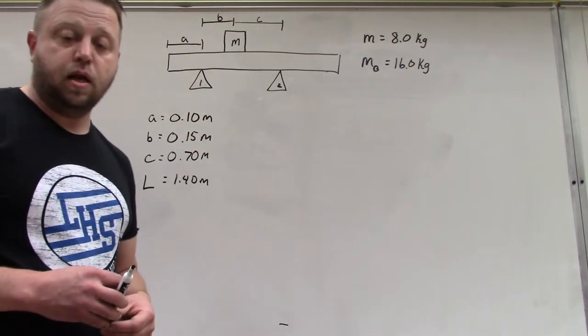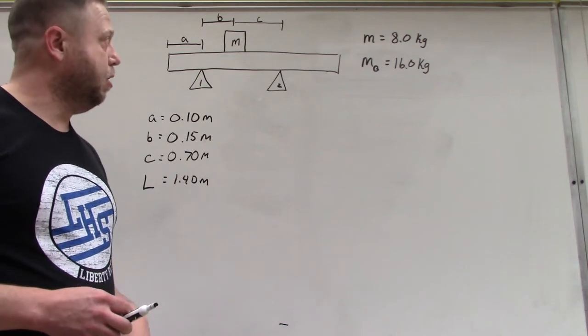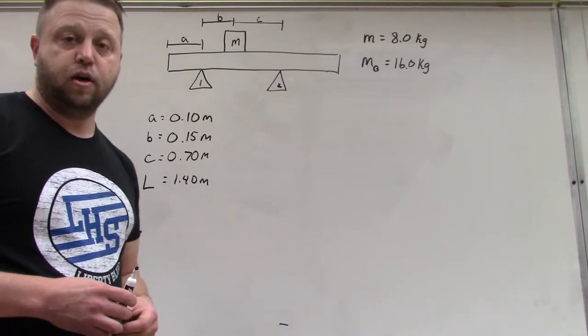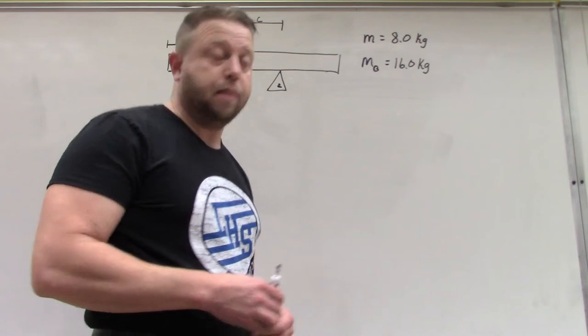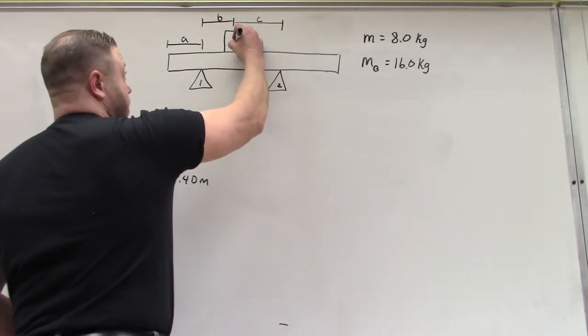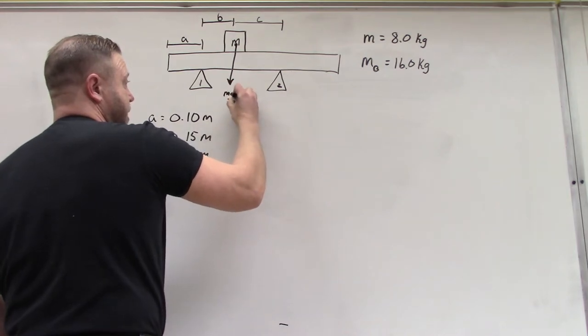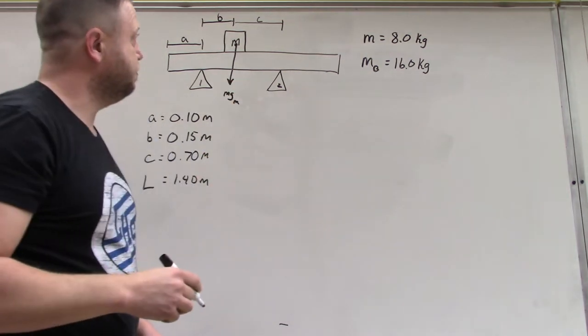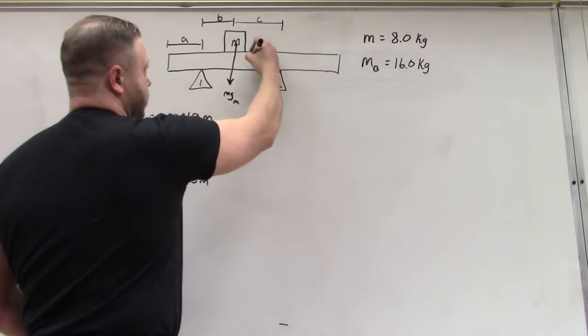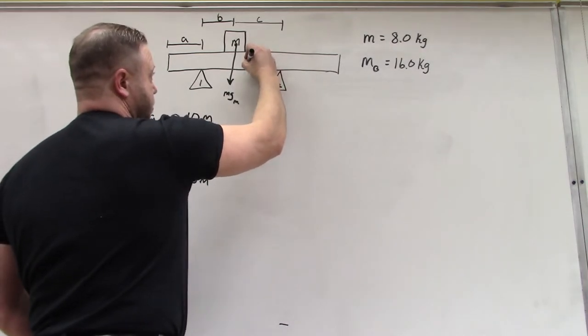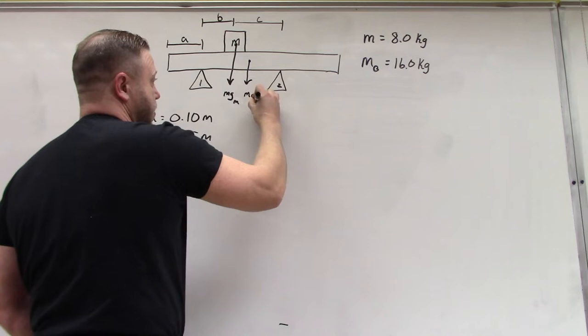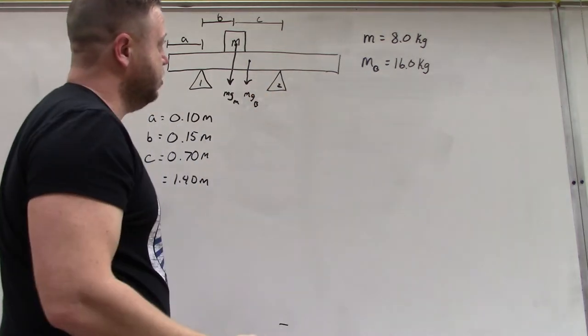As I talked about today in class, we want to first label and know where all of the forces acting on this beam are going to be. We've got mg for this mass, and since the mass isn't located at the middle of this system, we're going to put mg for the beam. Since we have two fulcrums, we're going to have an upward force here, we'll call this F2, and an upward force here, this is F1.